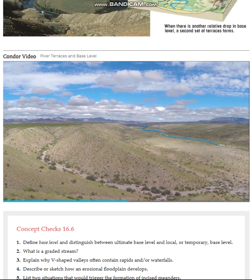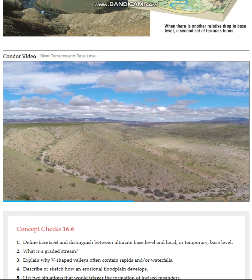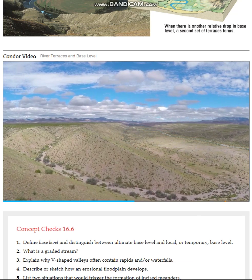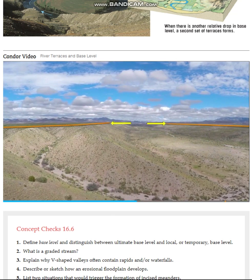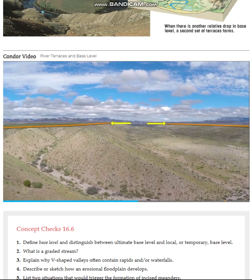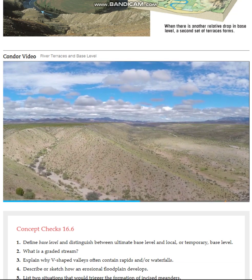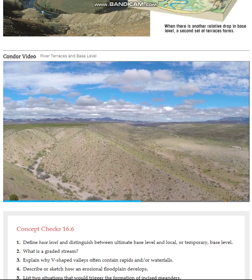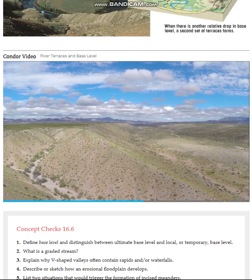Currently, the channel is here within the wide valley which extends this far on each side of it. The wide valley indicates that the stream is eroding laterally at the cut banks of its meanders. We can see terraces here — the flat areas that are higher than the valley on both the left and the right. This flat surface was formerly the wide flat valley of the stream before it cut downward to its current level.